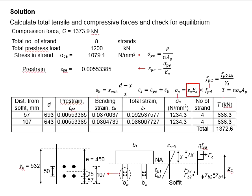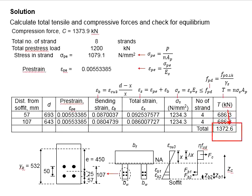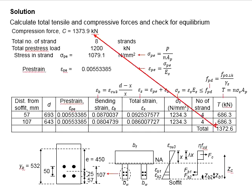It is found that ε_s × E_s is greater than the design strength. Since all the tendons have already yielded, the design strength is used, which is 1234.3 N/mm². Based on the design strength, multiplied by the number of strands and also the area of the strand, you will get the total tensile force. The summation of the tensile force gives 1372.6 kN. This number should theoretically be similar to the compression force. If you find a significant difference between the two numbers, most likely there is an error in the calculation.